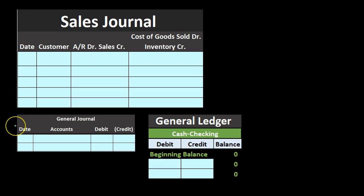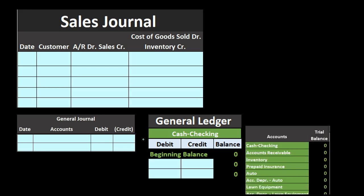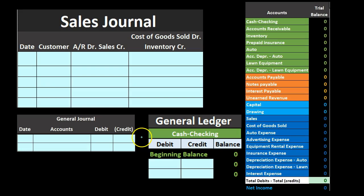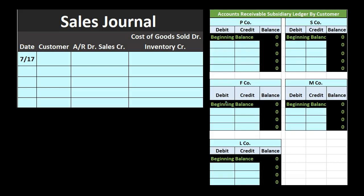We'll record this journal entry for the entire month's worth of data to the general ledger accounts, and then we will generate or see the effect on the trial balance. Note that the information recorded in the sales journal will not be reported in the financial statements or the trial balance until the end of the month. We're going to record these sales — they'll all be the same — so we'll just list them out here.